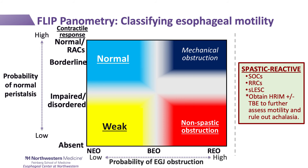We can bring this together to classify esophageal motility on FLIP using the contractile response patterns and the classification of EGJ opening — conceptually applying probabilities of normal peristalsis (high with RACs, low with absent contractile response) and the probability of EGJ obstruction (high with reduced EGJ opening, low with normal EGJ opening). The spastic reactive group falls outside this conceptual approach and likely warrants correlation with manometry and/or timed barium esophagram.